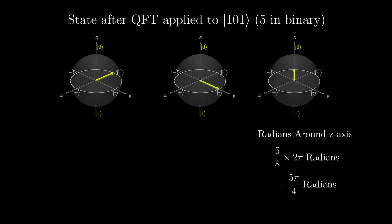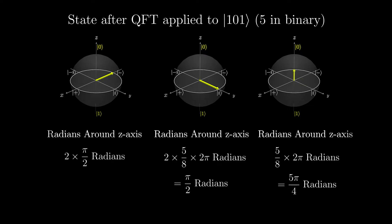To get the amount rotated around the z-axis of the next qubit, we multiply the previous one by 2. So the next qubit has been rotated 2 times 5 over 8 times 2 pi radians, so rotating the qubit pi over 2 radians around the z-axis. The last one is 2 times that, which is 2 times pi over 2 radians.